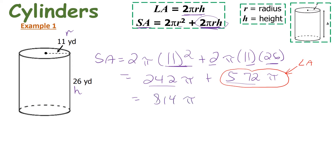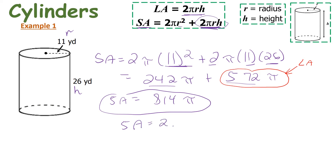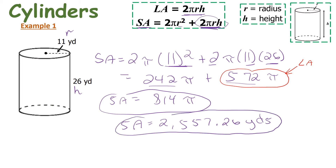If you want the answer in terms of pi, the surface area is 814π. Multiplying pi through: 814 times π is approximately 2557.26 yards squared. That is the surface area of this cylinder, and 572π is the lateral area.